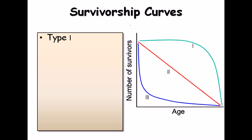Now let's talk about another very important concept in population ecology: the survivorship curve. This curve helps us understand the type of organisms we are dealing with. There are three types — Type 1, Type 2, and Type 3 — based on survivability and lifespan. The x-axis shows age and the y-axis shows number of survivors.